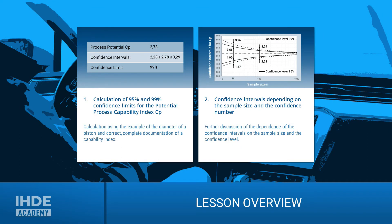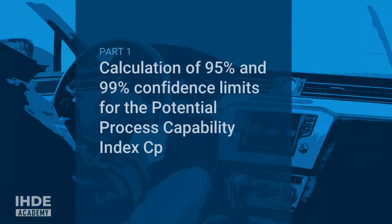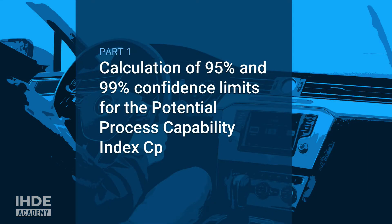This lesson is divided into two chapters. In the first chapter, we will calculate two confidence intervals: one for a 95% confidence level and the other for a 99% confidence level, both for the same sample size. In the second chapter, we look at the influence of the confidence level and the sample size on the width of the confidence interval.